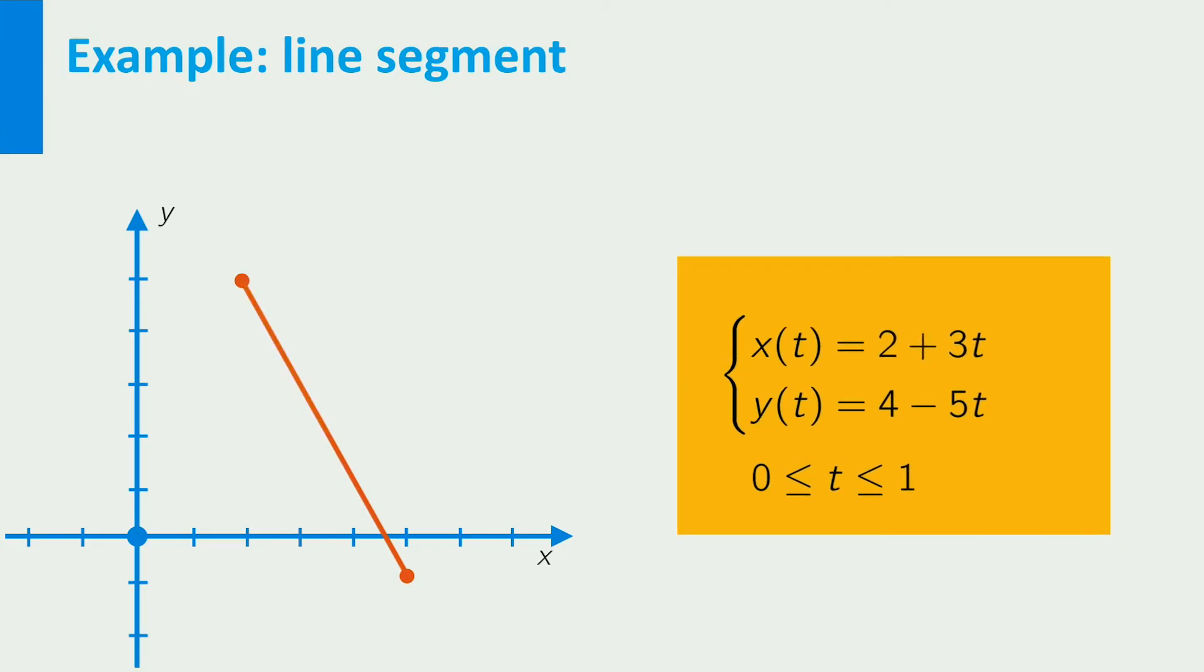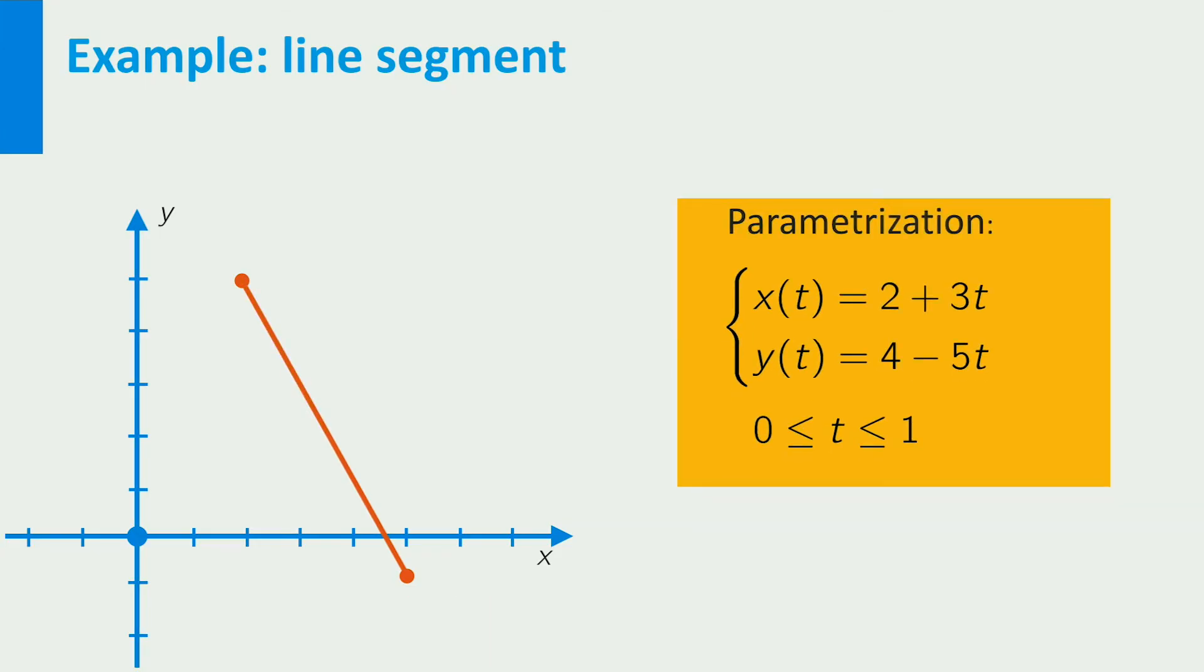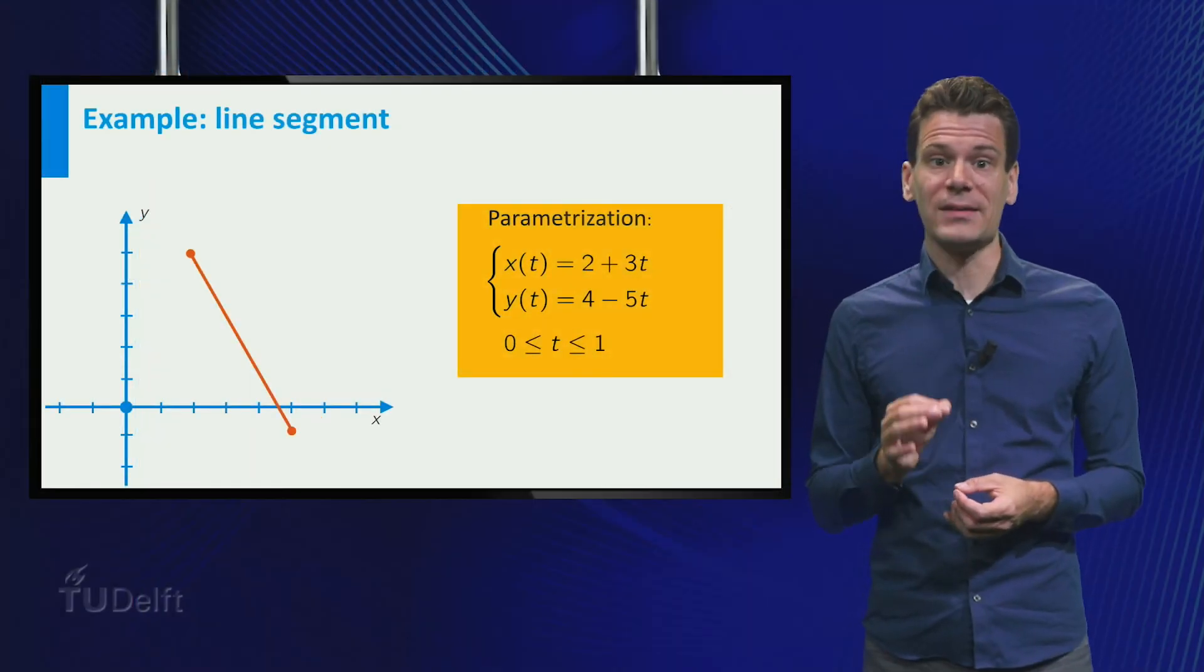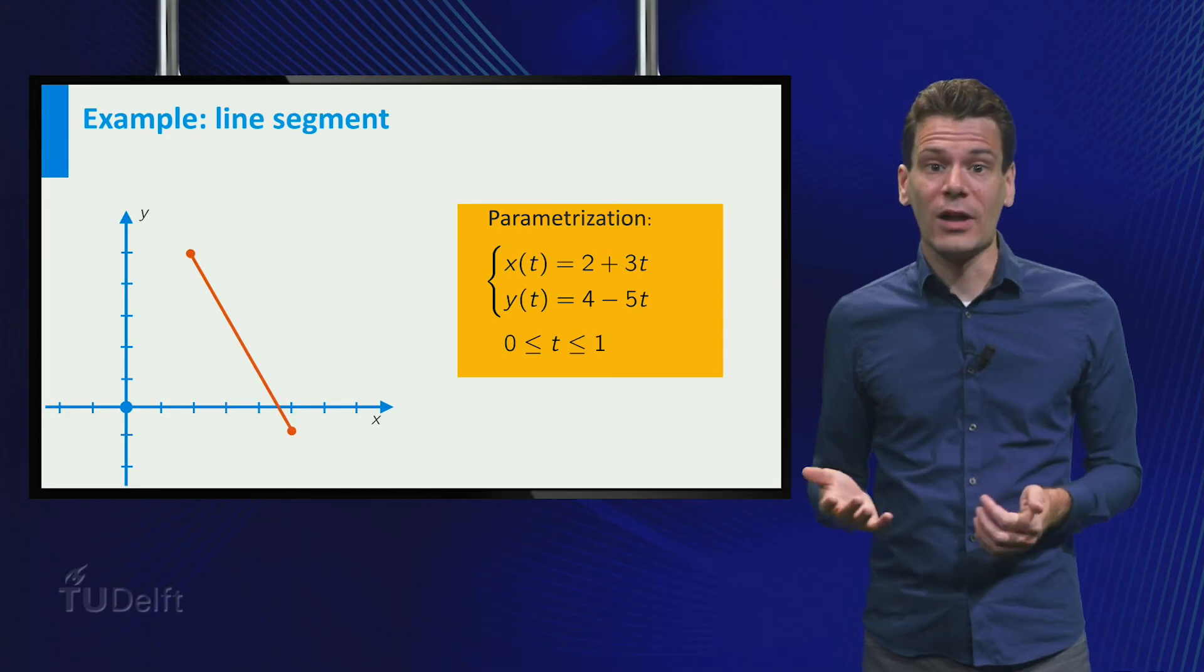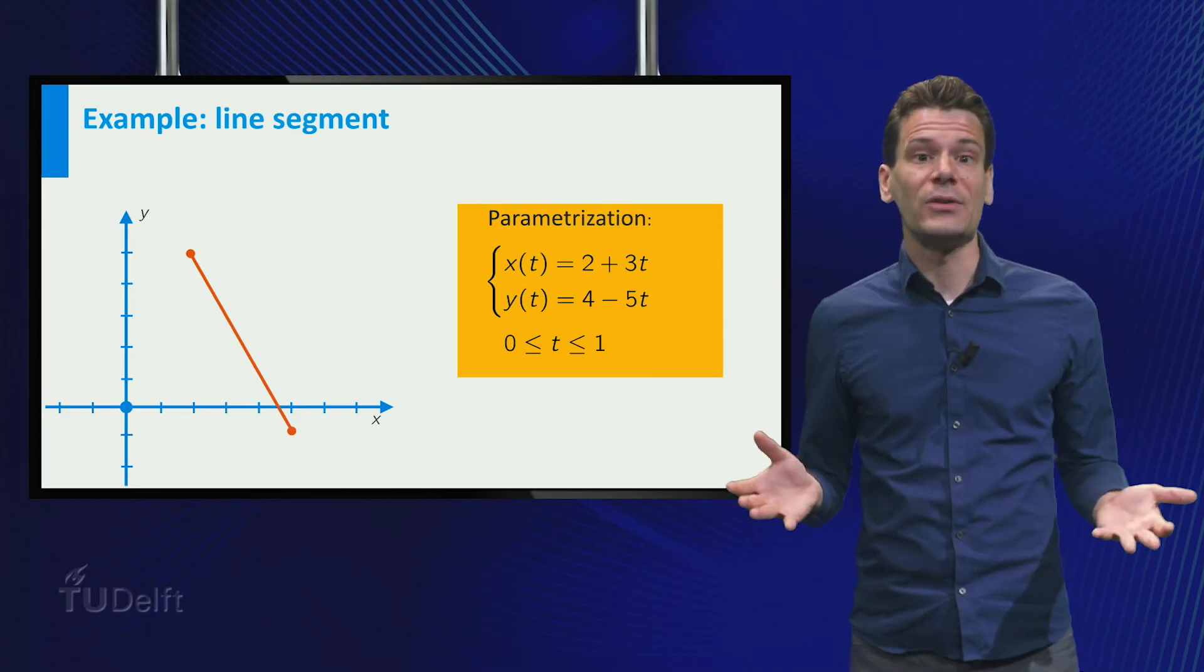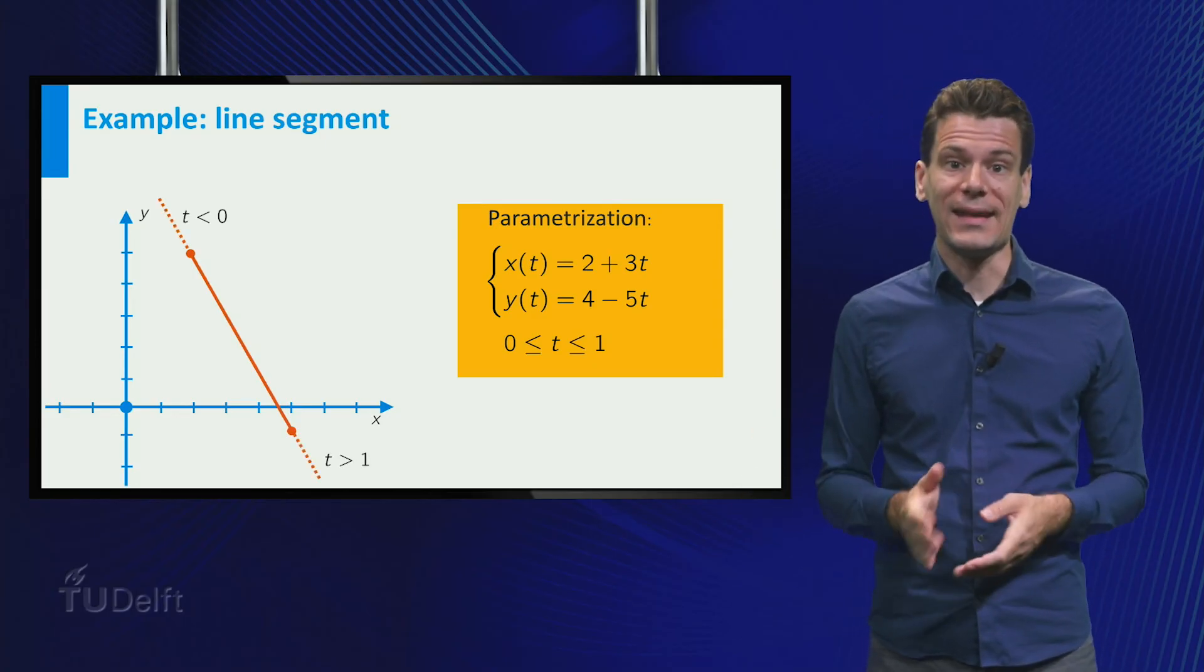The parameter interval is [0,1]. Together, the coordinate functions and the parameter interval give a parametrization of the line segment. It is important not to forget about the parameter interval. If we would allow t to get any value, then you get the entire line through AB, and that is not what we wanted.